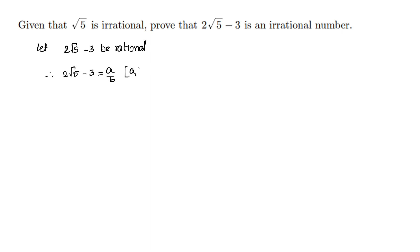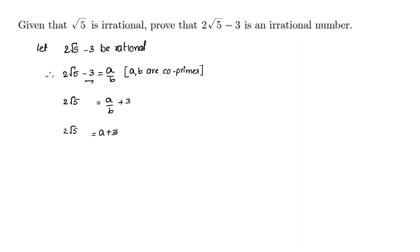Where A and B are co-primes. Our main agenda should be to write exactly the equation for root 5. So, root 5 is equal to A by B plus 3. That means 2 root 5 is equal to A plus 3B by B. So, root 5 is equal to A plus 3B by 2B.